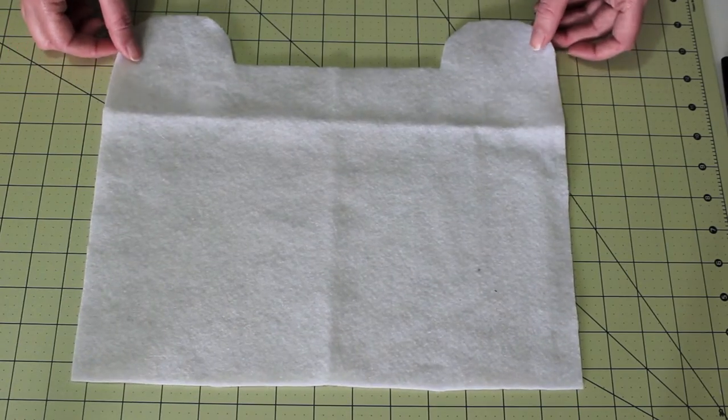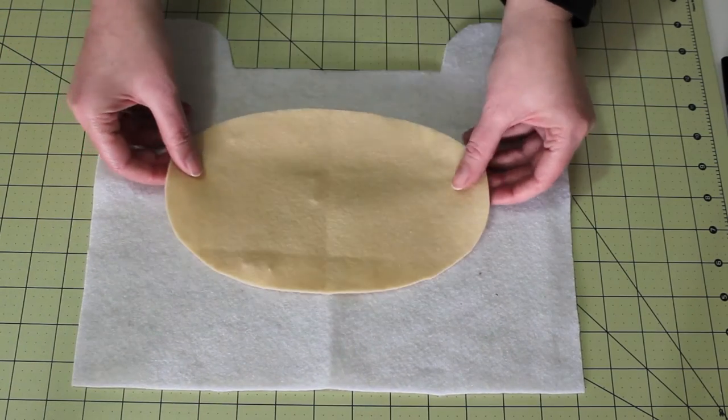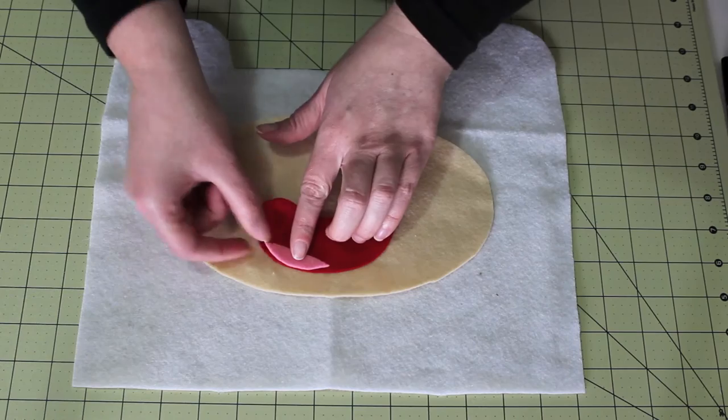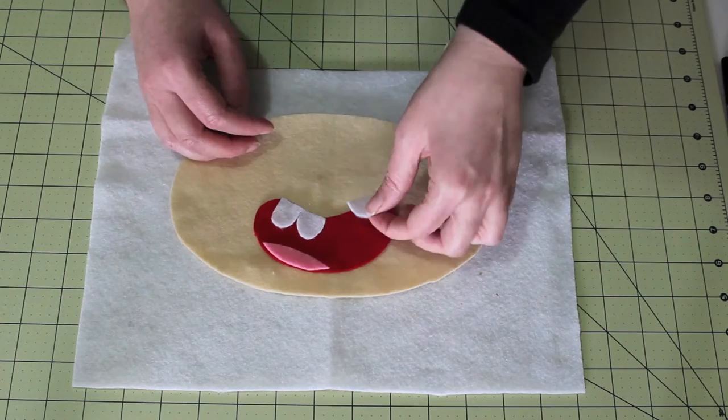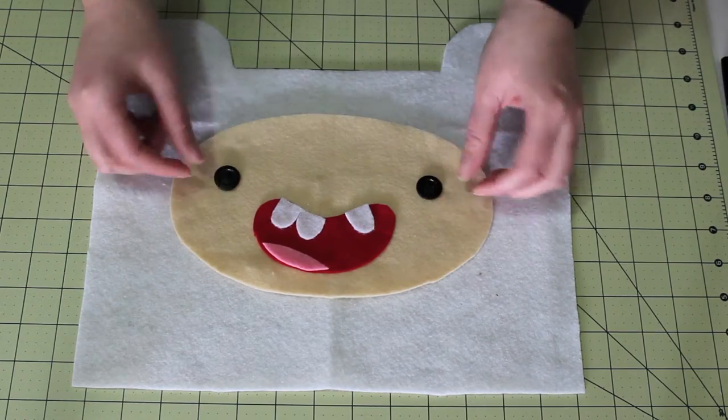Starting with the front, take Finn's hat, his face, his mouth, tongue, teeth and the buttons for his eyes and place them all on top of each other.